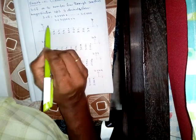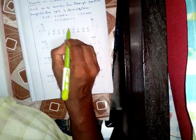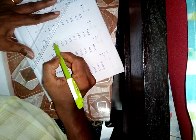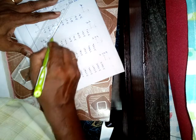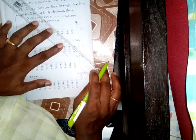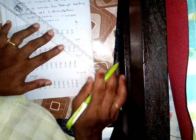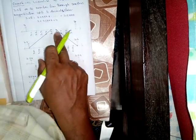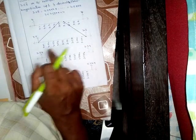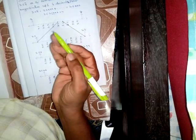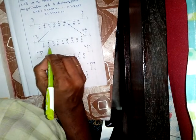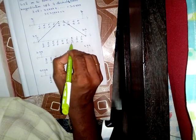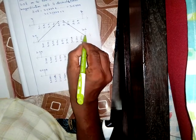3.58 lies between 3.5 and 3.6. Draw another number line with 3.5 at the start and 3.6 at the end. Again divide into 10 equal parts and write: 3.51, 3.52, 3.53, 3.54, 3.55, 3.56, 3.57, 3.58, 3.59, and 3.6.